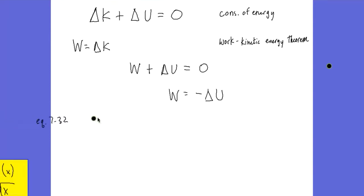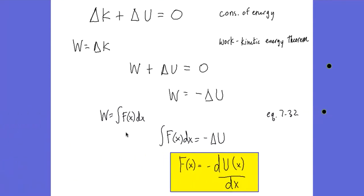Combining that with our equation for work done by a general force from chapter seven — work equals the sum of all force times displacement intervals between some initial and final position — and taking the derivative of both sides with respect to X, we see that the force acting on an object is opposite to the instantaneous change with respect to X. In other words, the force is opposite of the slope.